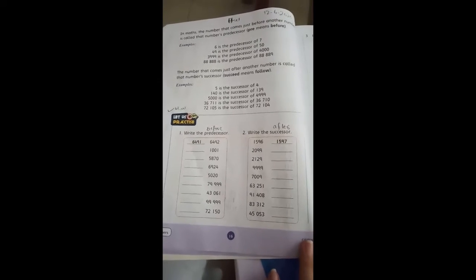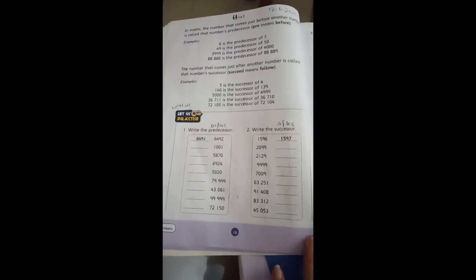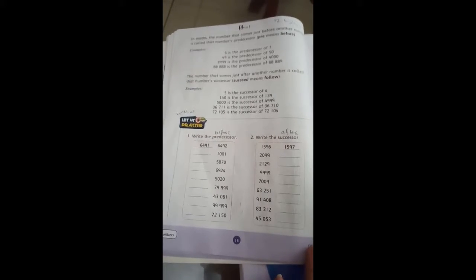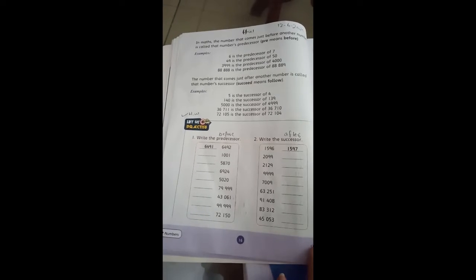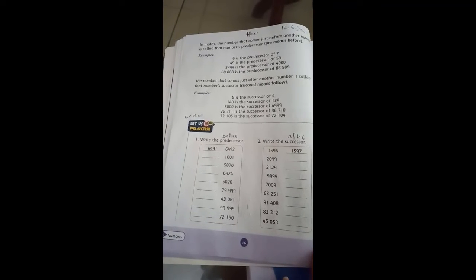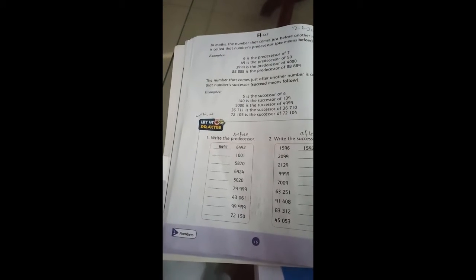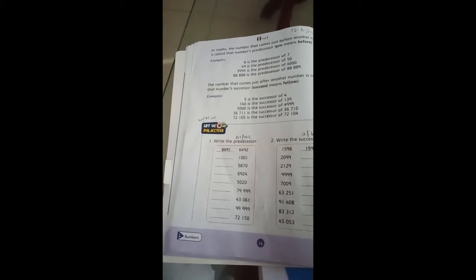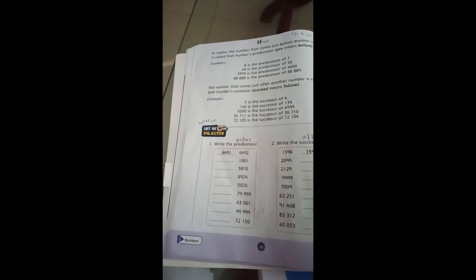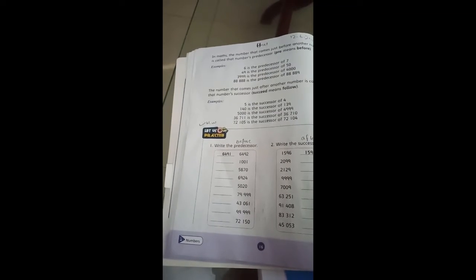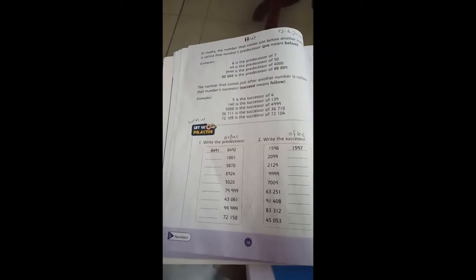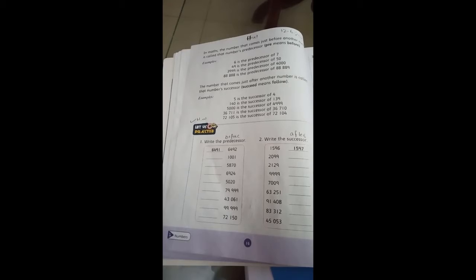All of Grade 3, see, the predecessor means the number that has occurred before any number. So you can say the predecessor of 5 is 4, the predecessor of 3 is 2, the predecessor of 9 is 8, the predecessor of 7 is 6. And the successor is the number that has occurred after any number. The successor of 5 is 6, the successor of 8 is 9, the successor of 12 is 13.